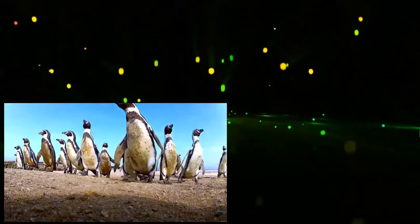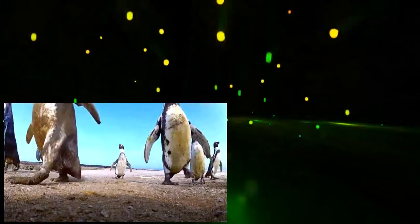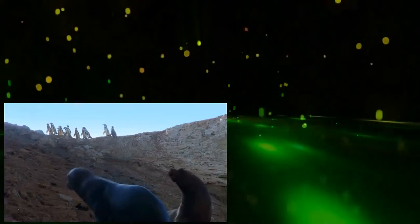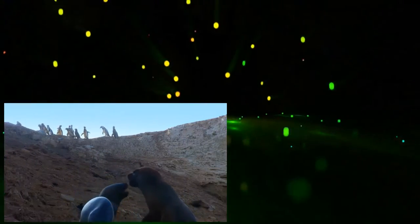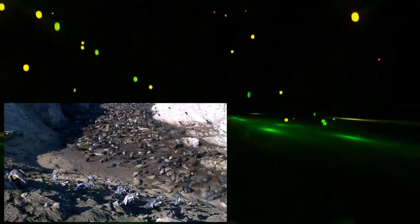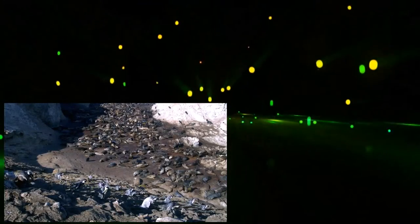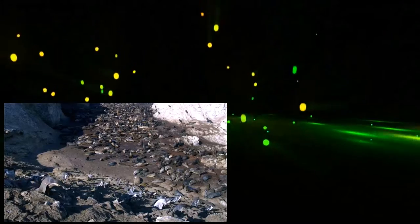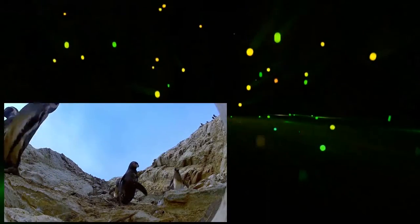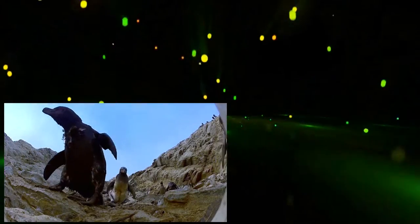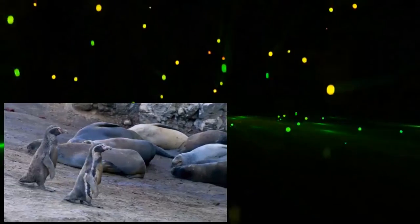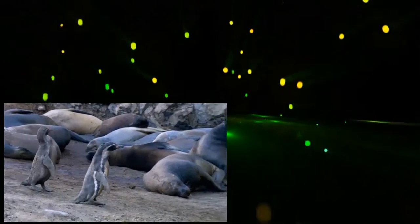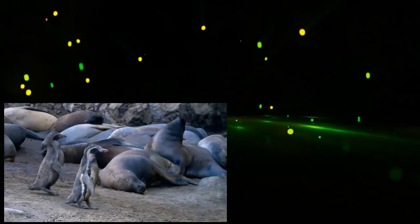Before the Humboldts can take their bath, they must cross a dangerous barrier. Sea lions block their route to the sea. Descending the cliff is the easy bit. On the shore, they must walk on tip-toe to avoid disturbing the sleeping giants.